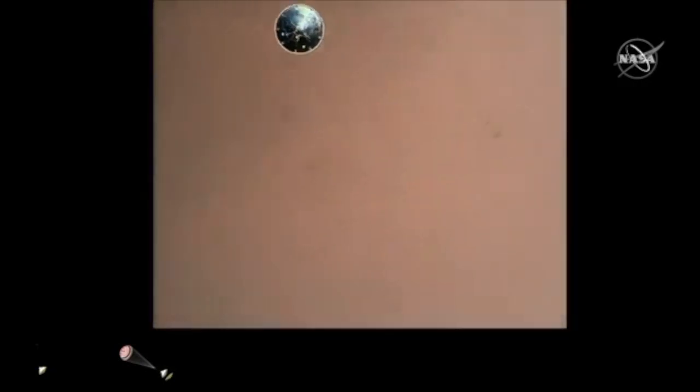Perseverance has now slowed to subsonic speeds and the heat shield has been separated. This allows both the radar and the cameras to get their first look at the surface. Current velocity is 145 meters per second at an altitude of about nine and a half kilometers above the surface.